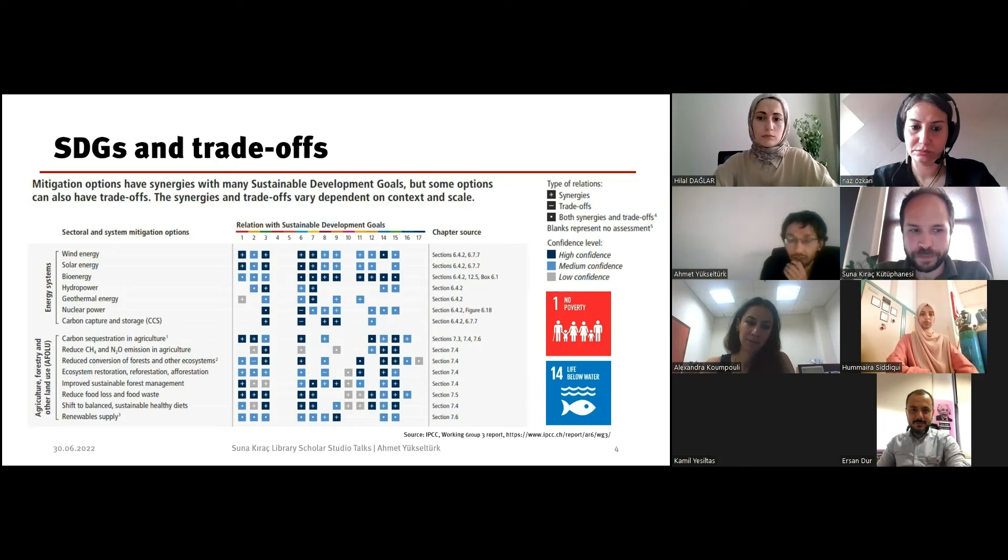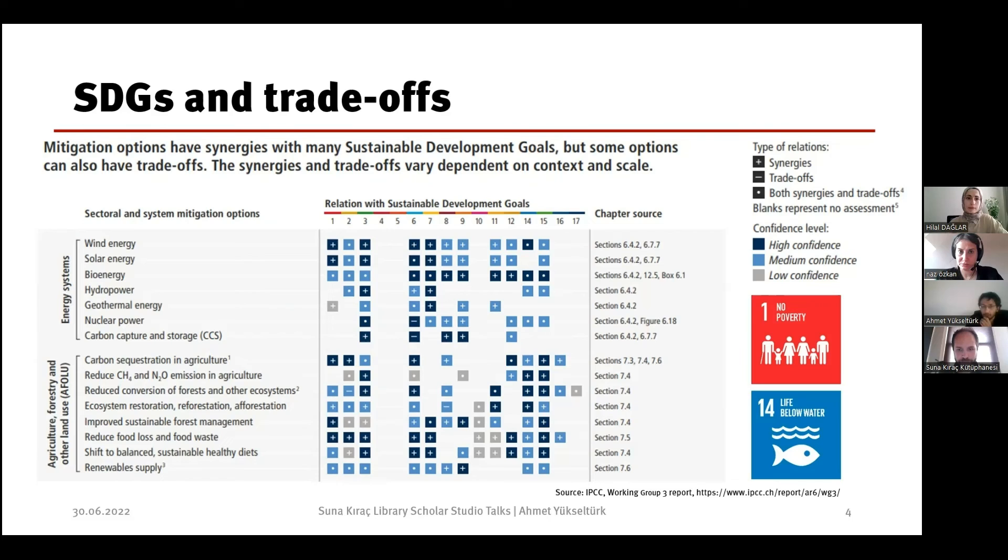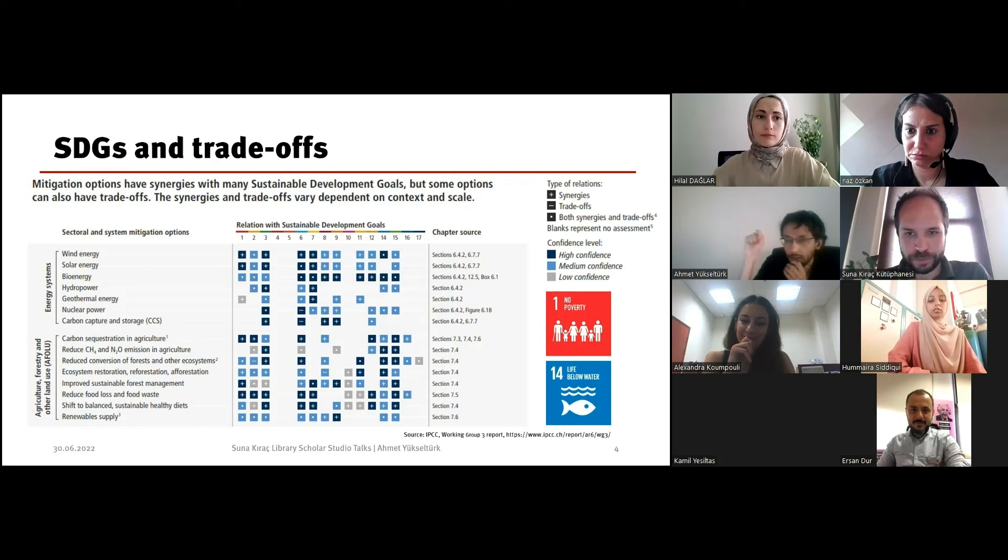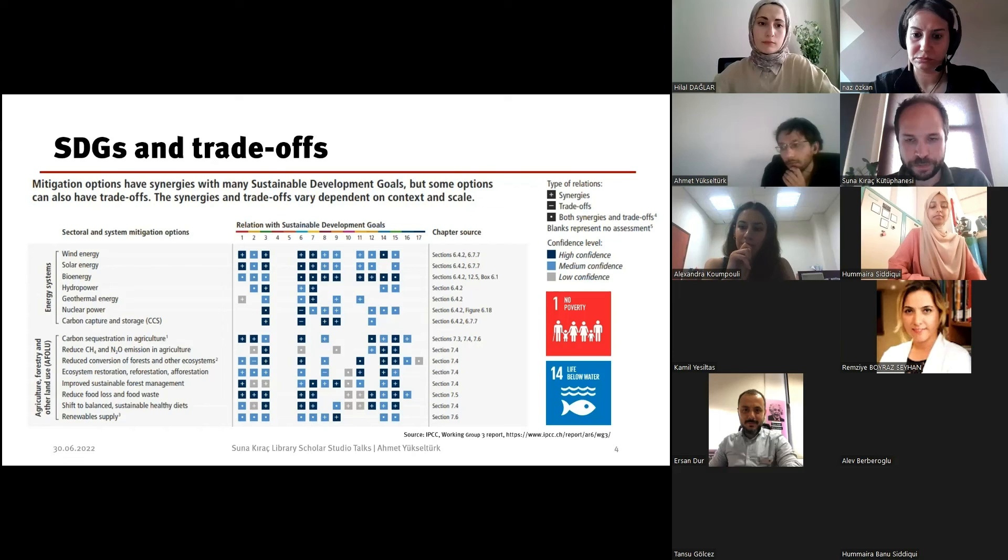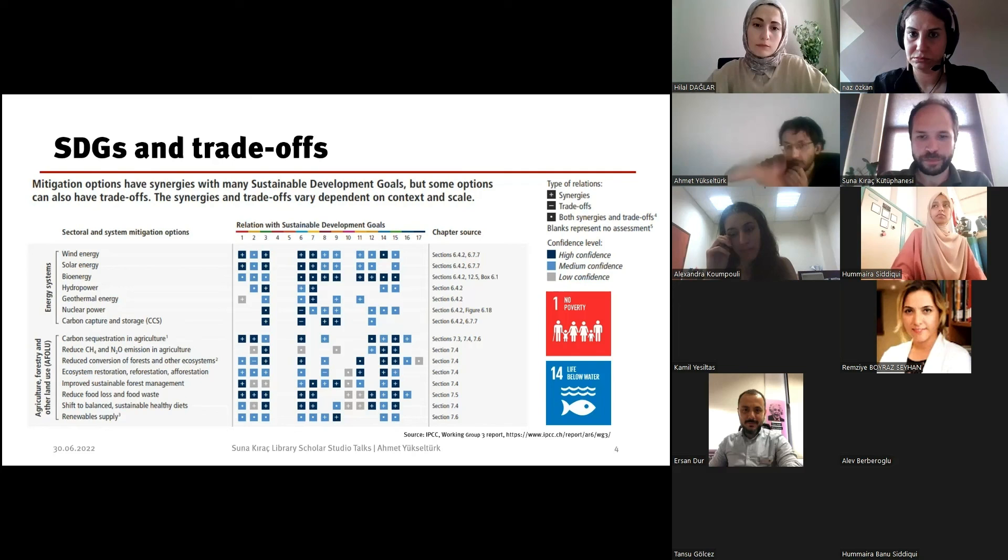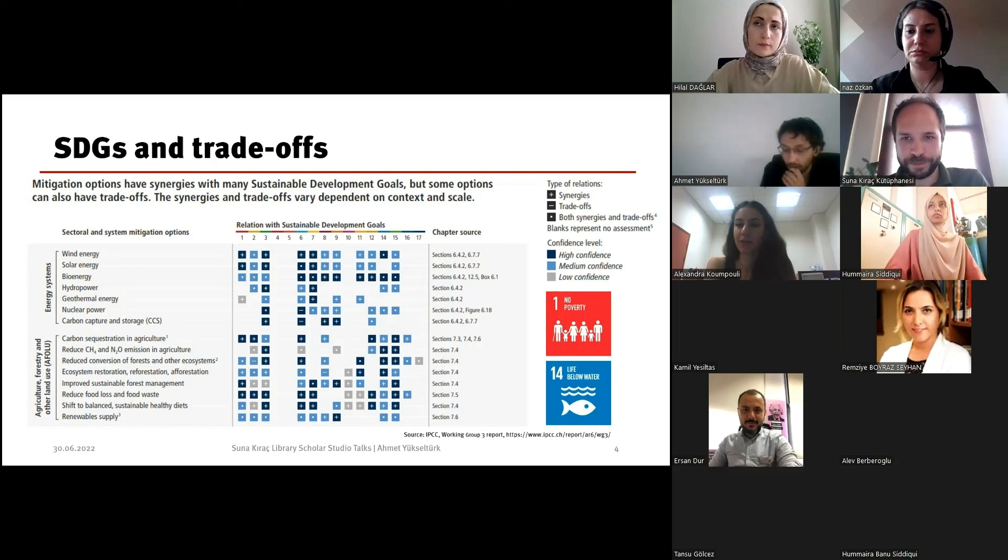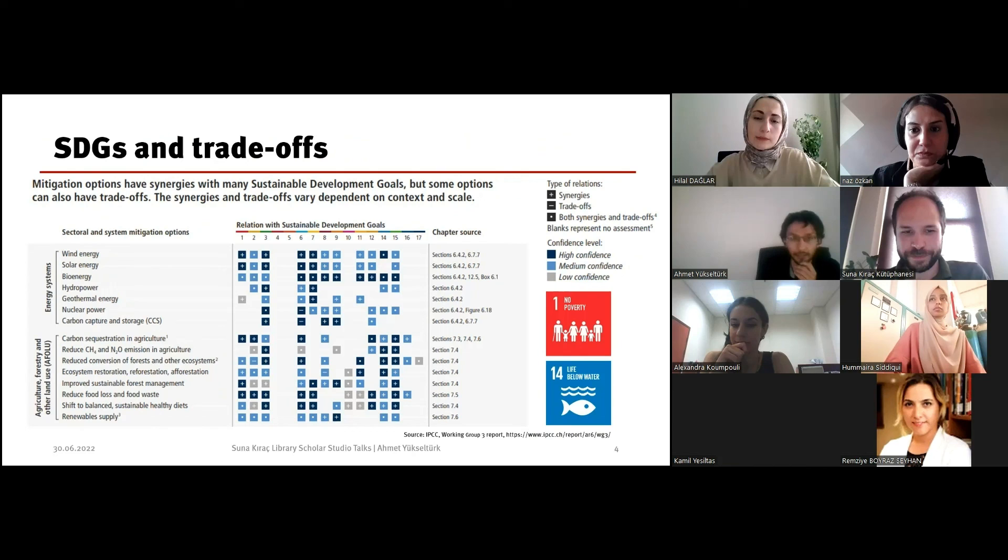But if you look at Sustainable Development Goal 14, life below water, if we increase offshore wind energy turbines, we will get this dot. It means there is also a downside to that option. Imagine this matrix of options and criteria. In order to reach our climate development goals and climate mitigation goals, we have to have some algorithms to guide us in a smart way. Thank you.